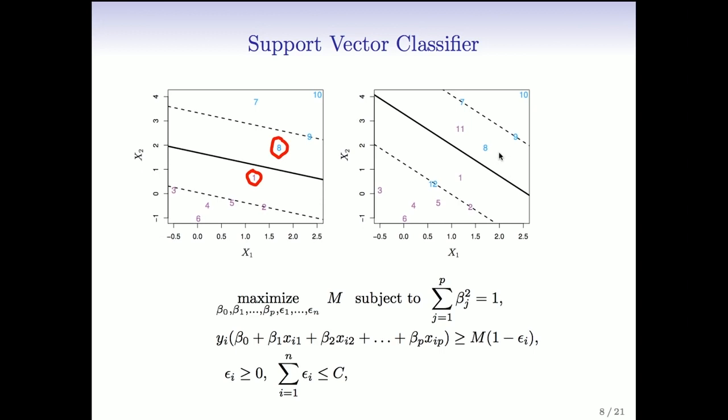In the right plot, it's essential to have a soft margin, because we cannot get a separating hyperplane. And so here we have a candidate hyperplane with its margins, and we see that there's several points on the wrong side.